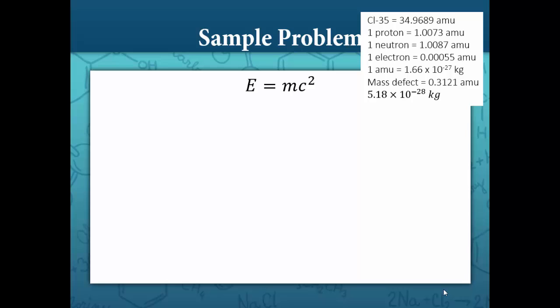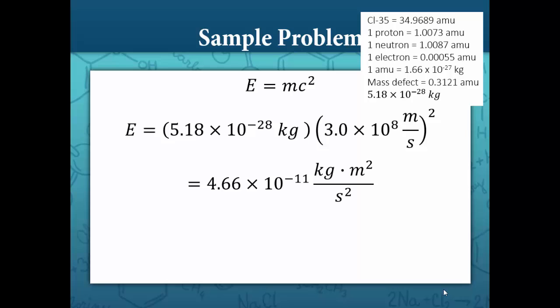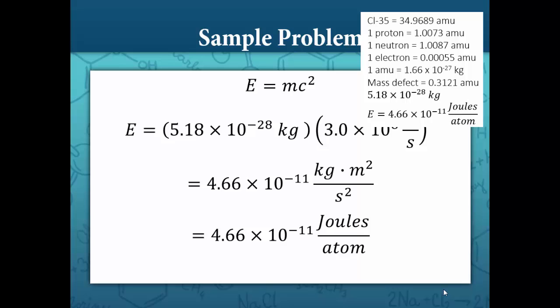Plugging this value for mass into our equation E equals MC squared, E equals 5.18 times 10 to the negative 28 kilograms times the speed of light, 3.0 times 10 to the 8th meters per second squared. We get a binding energy of 4.66 times 10 to the negative 11 joules. Since we calculated the mass defect for one atom, this is the binding energy for one atom.